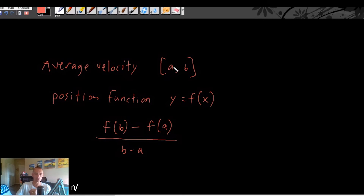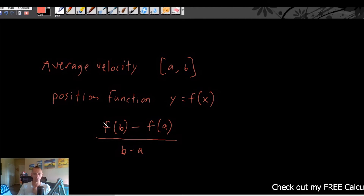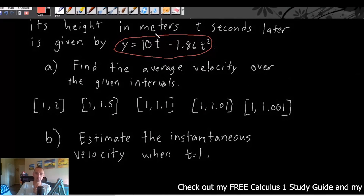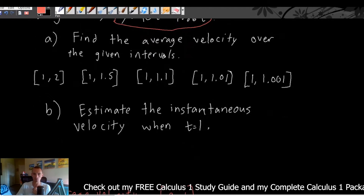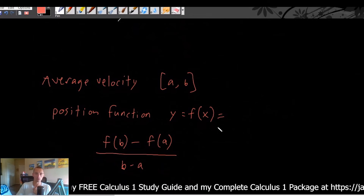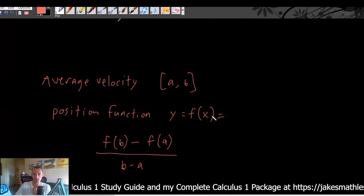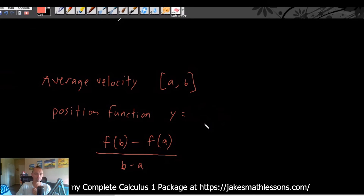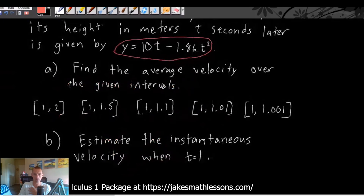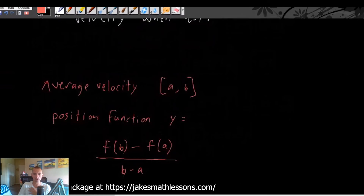You plug in your second point into the position function, plug in your first point, take the difference — that's your numerator — and the denominator is just b minus a, your second point minus your first point. We're going to use our position function y equals 10t minus 1.86t squared, which is a function of t instead of x, but the method is exactly the same.